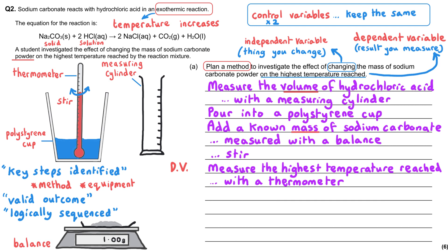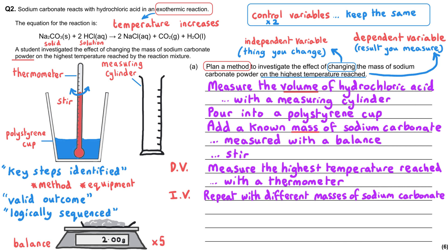Since we need to know the effect of changing the mass of sodium carbonate, the next step is to repeat the experiment using a different mass of sodium carbonate and again measure the highest temperature reached. Realistically, aim to use five different masses in total, then repeat the whole investigation again.